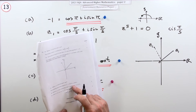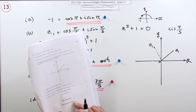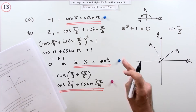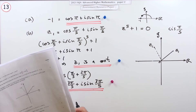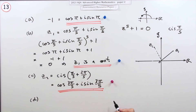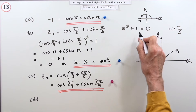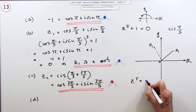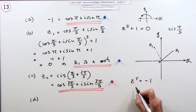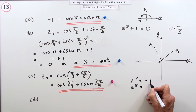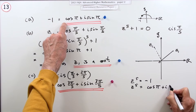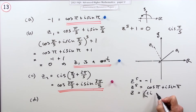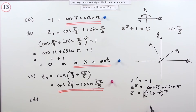Part d: find the remaining roots z3, z4, z5 in the same form, but giving the principal argument — the angle in its smallest form. Solving z^5 = −1, we write −1 as cos π + i sin π, so z = cis(π) to the one-fifth. Normally you wouldn't add multiples of 2π, but here taking a fifth of each gives different results.